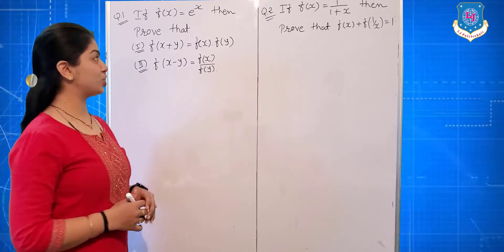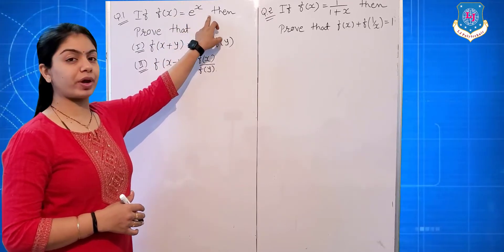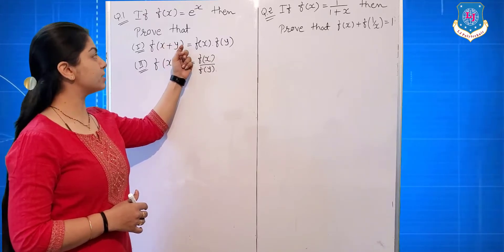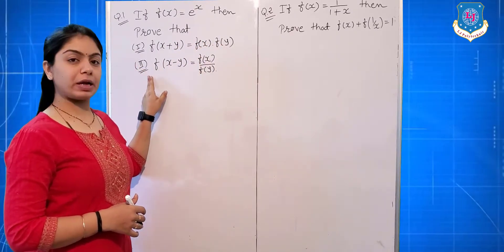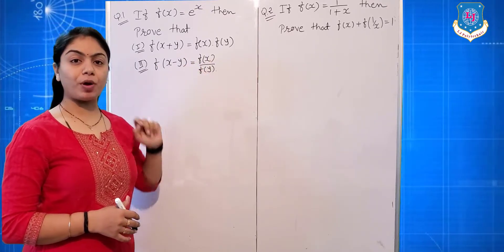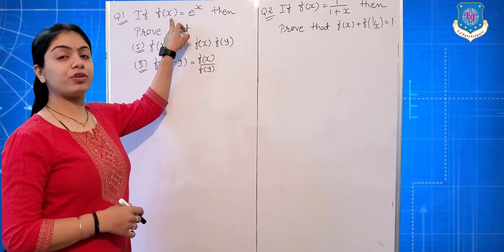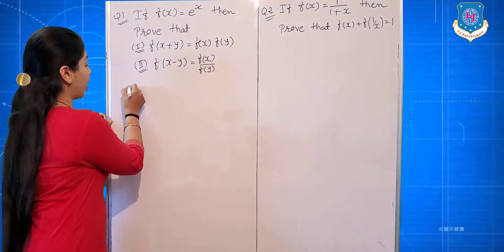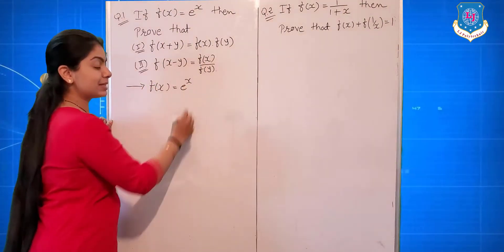Our first question is: if f(x) is equal to e raised to x, then prove that — first part: f(x+y) is equal to f(x) into f(y); and the second part: f(x−y) is equal to f(x) upon f(y). The given information is f(x) = eˣ.